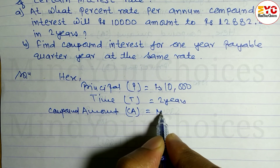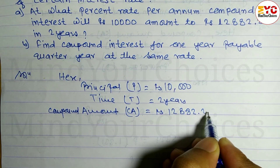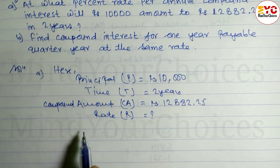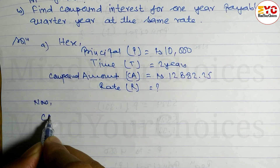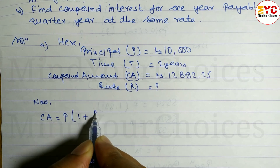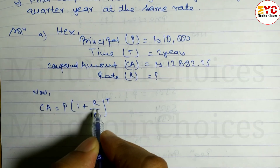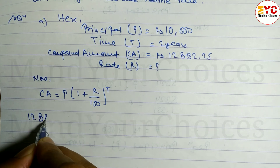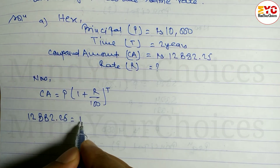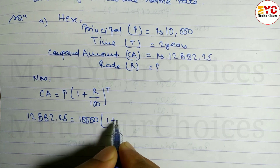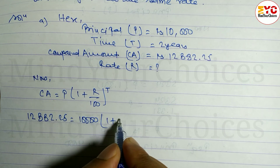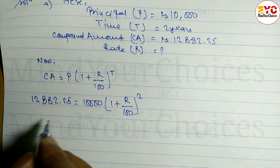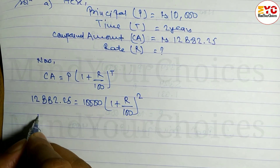Rate of interest r is equal to what? Using the compound amount formula: CA is equal to P times (1 + r divided by 100) to the power t. CA value is 12882.25, P is 10000, so: 12882.25 is equal to 10000 times (1 + r divided by 100) to the power 2.